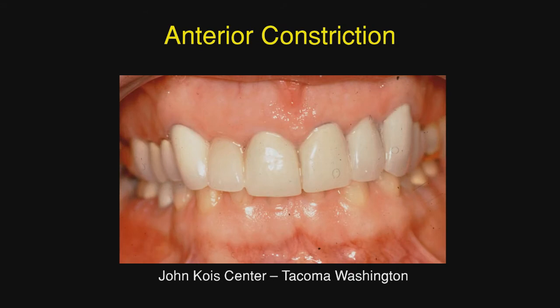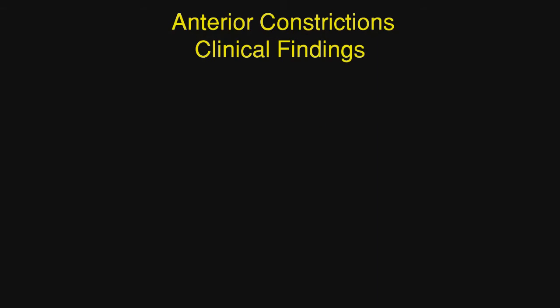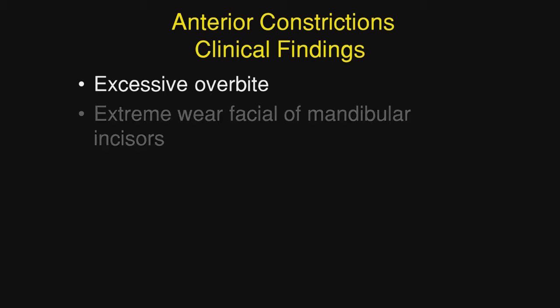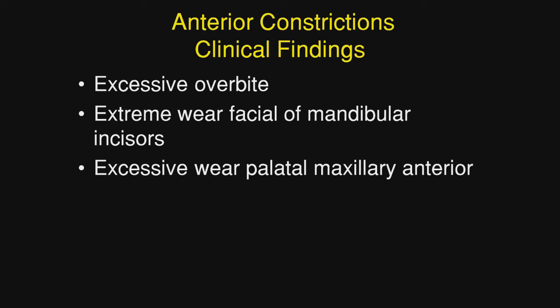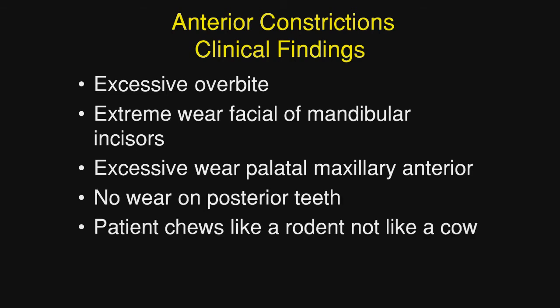Anterior constriction. We see we have a very deep overbite here, and in an anterior constriction, these are our clinical findings. First, we have an excessive overbite. Number two, we have extensive wear on the facial of the mandibular incisors, as well as excessive wear on the palate of the maxillary anteriors. There is no wear on the posterior areas because the patient chews like a rodent, not like a cow, and without lateral excursions, the patient has no temporomandibular symptoms.